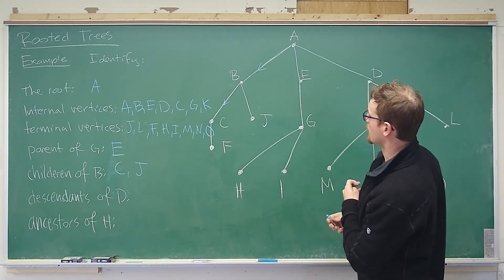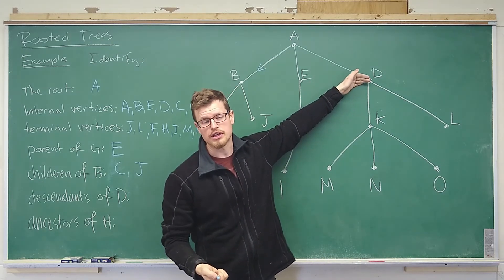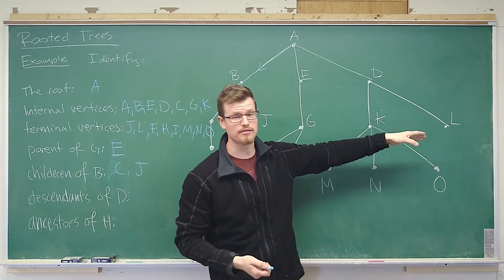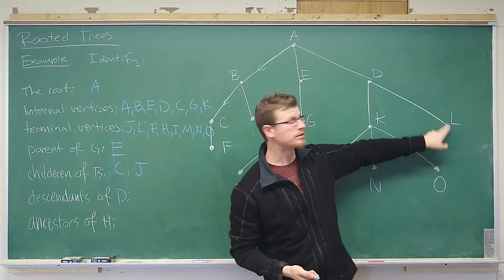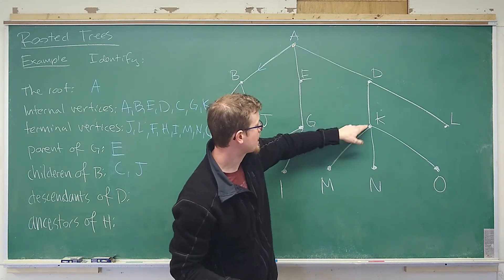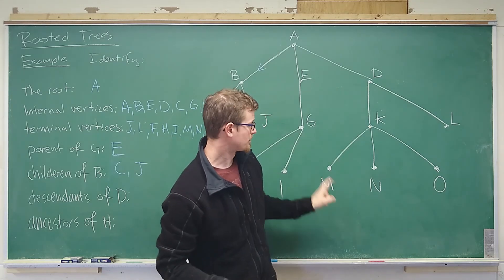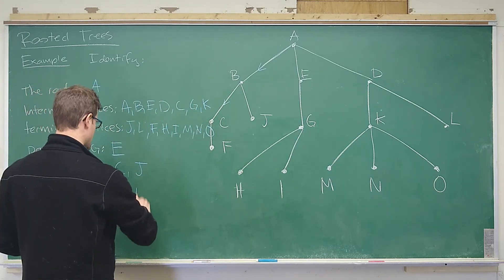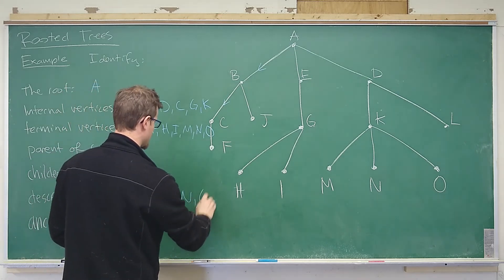But we want to say all right let's pick out a particular vertex and look at all of its descendants. So what that means is we're just looking at the vertices which have a path from a to that vertex that includes d. So a path from a to l would include d. So d has descendant l. A path from a to k would include d. So d has descendant k. And so on. We can pick up m, n, and o in the same way. So that would give us k, l, m, n, and o.